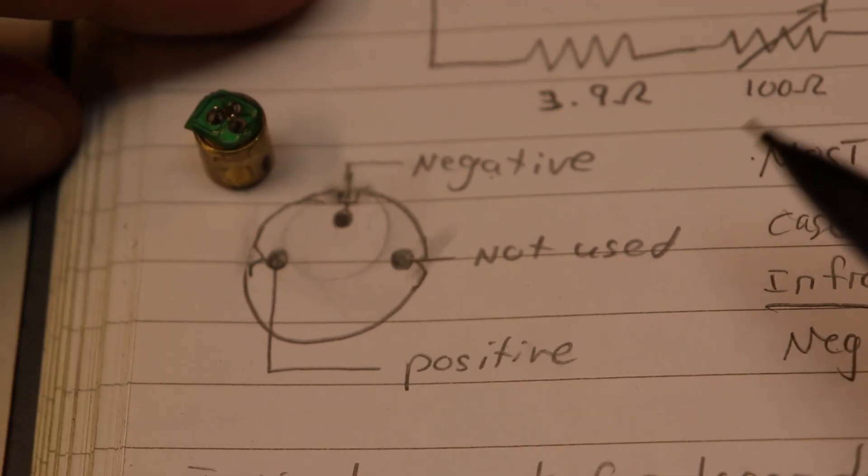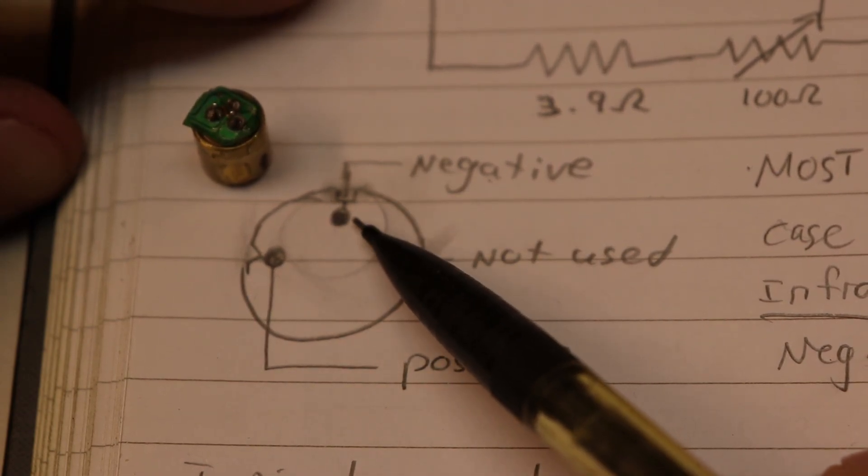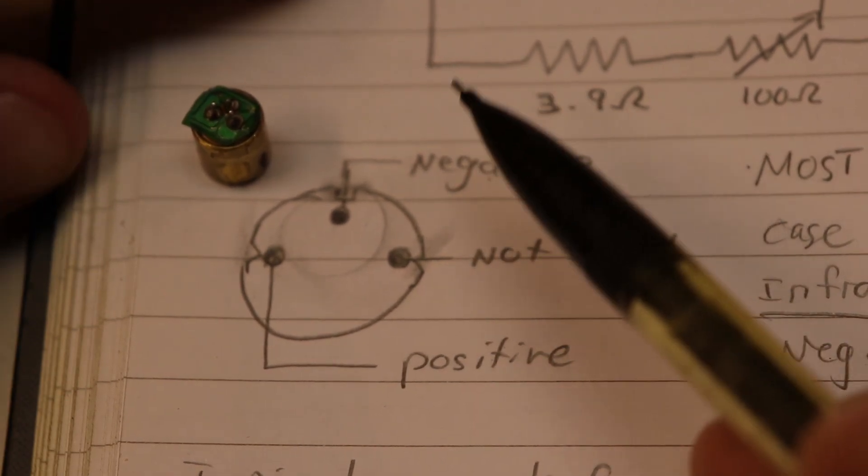To wire these lasers up correctly, generally they're wired in this configuration where the top pin is negative and the left most one is positive.